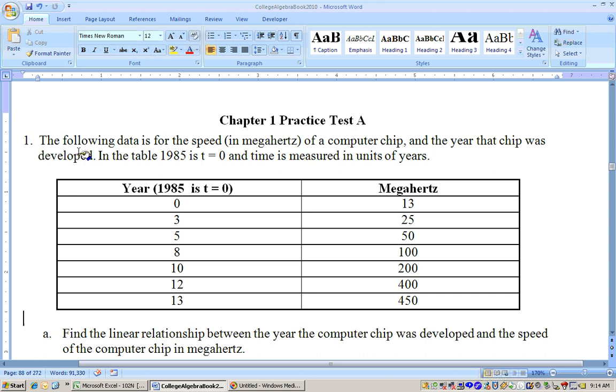Okay, this is practice test 1A, and it says the following data is gathered on the speed of a computer chip in the year it was made. 1985 is t equals 0, so this would be 1985, 1988, so on, up to 1998, and this is the speed in megahertz of the computer.